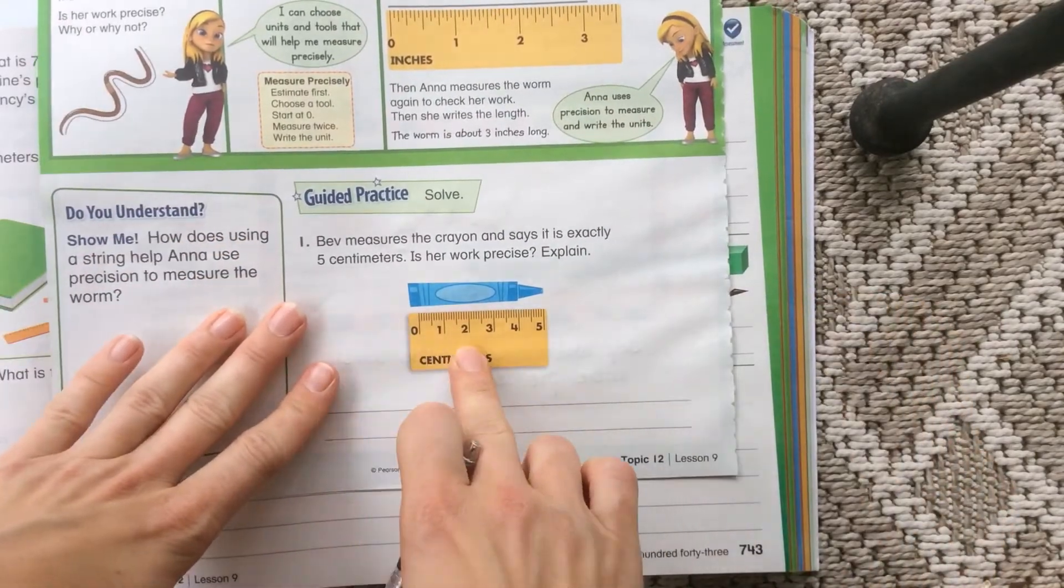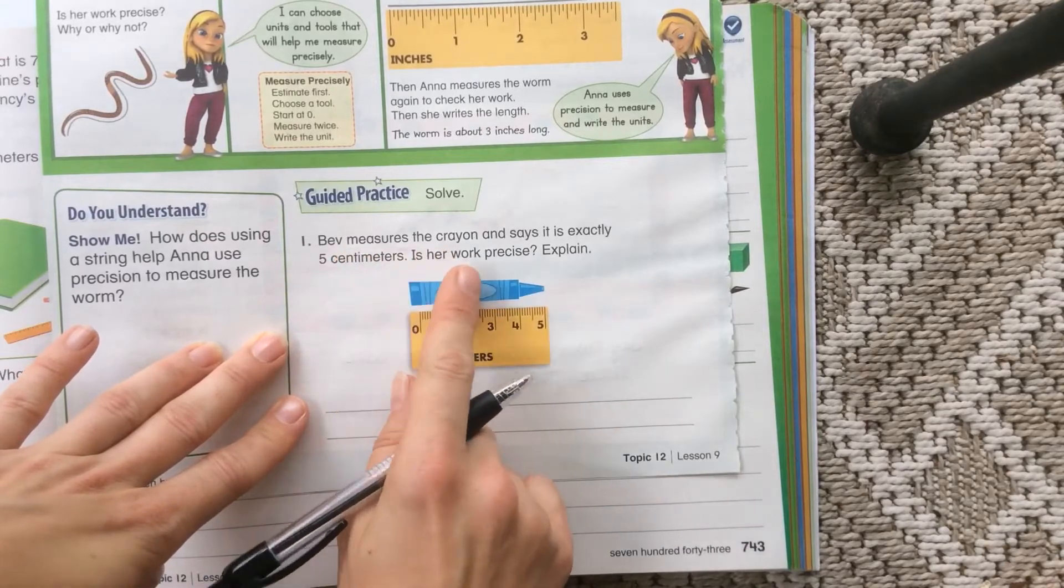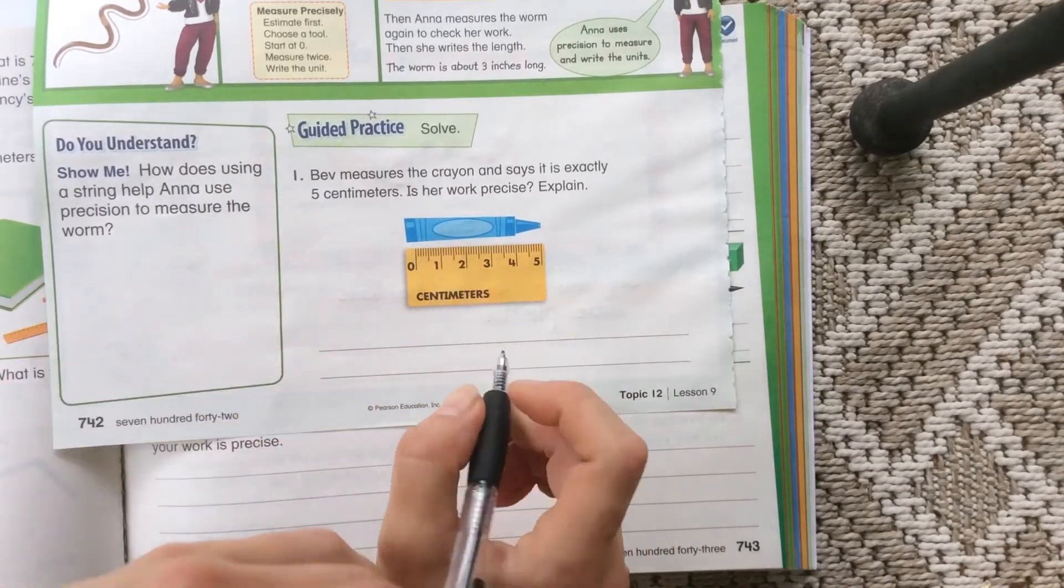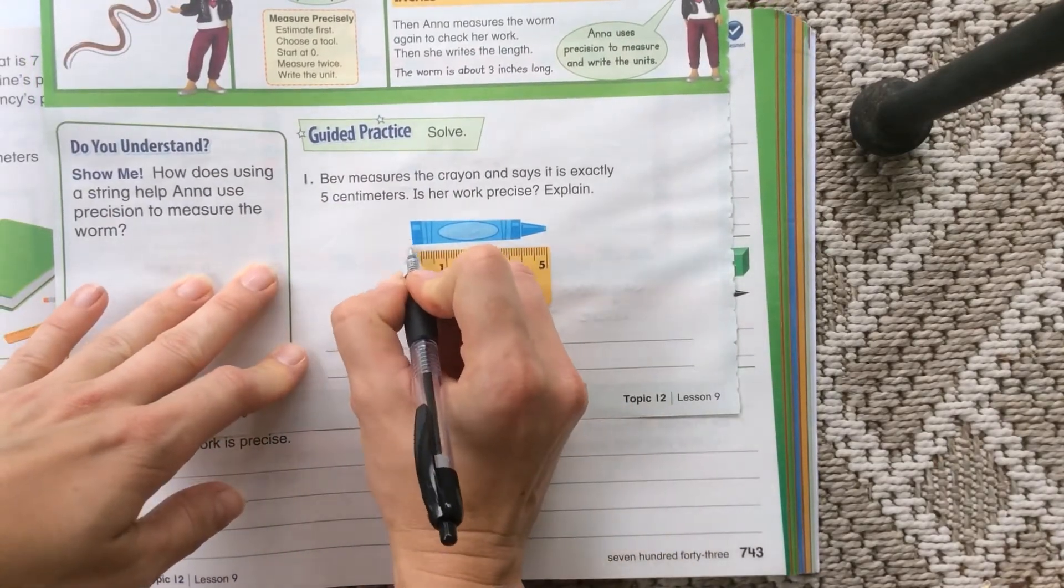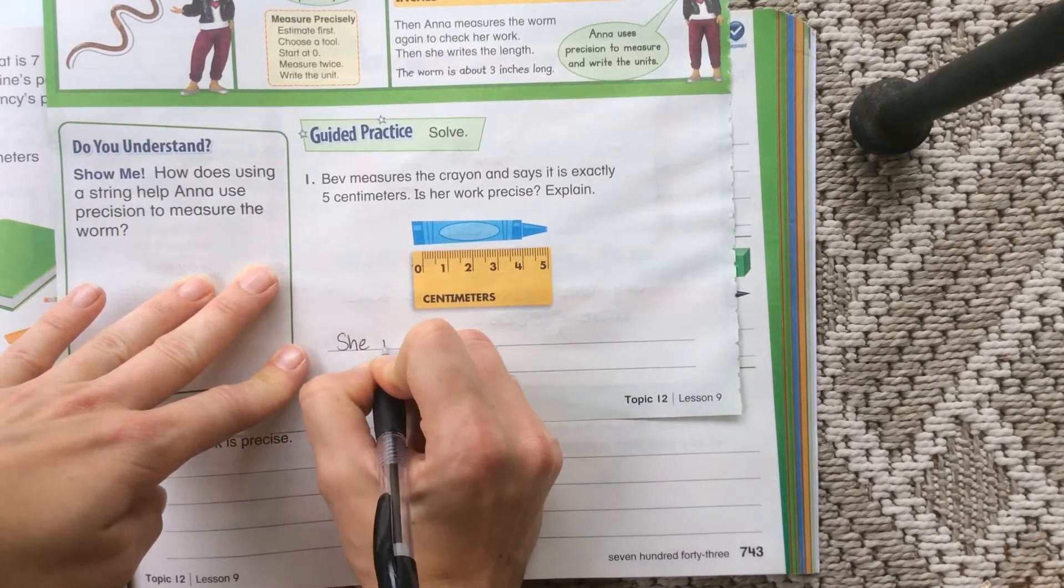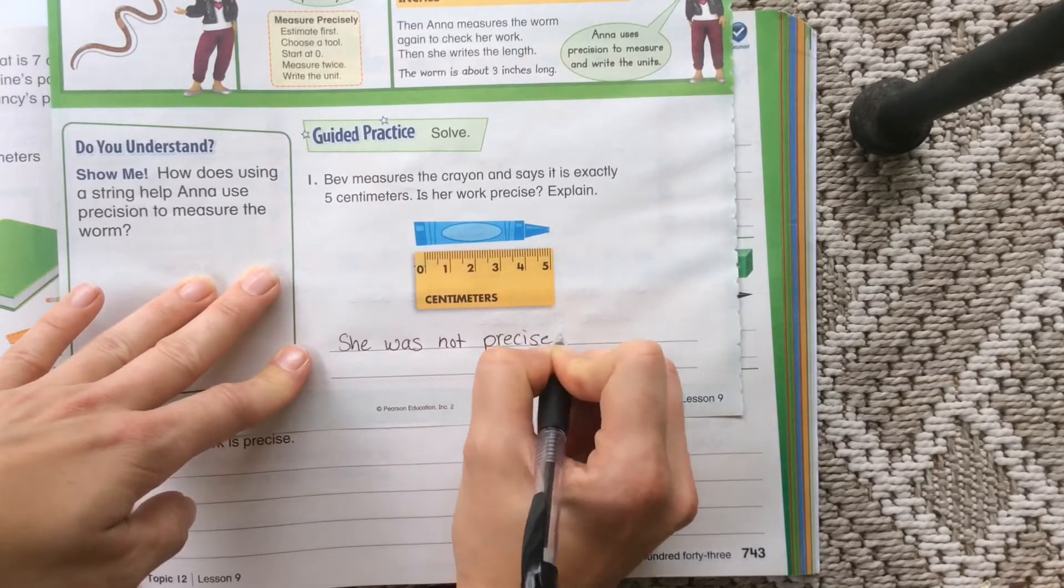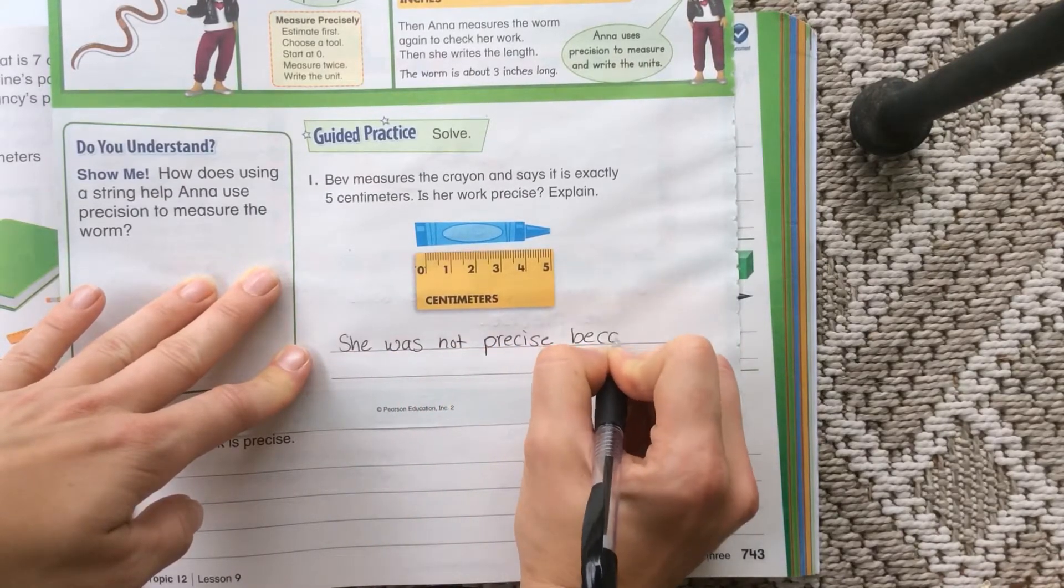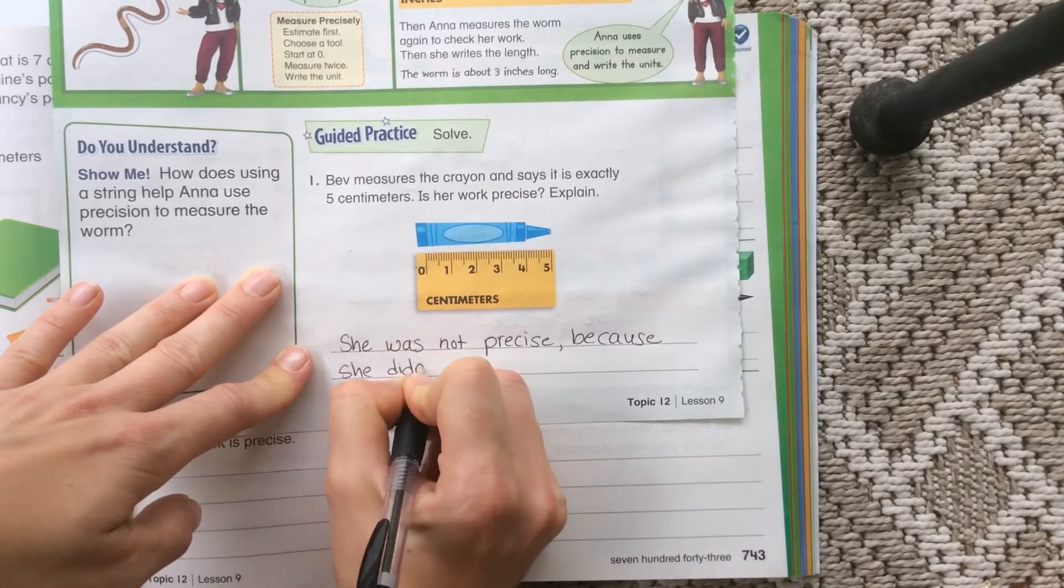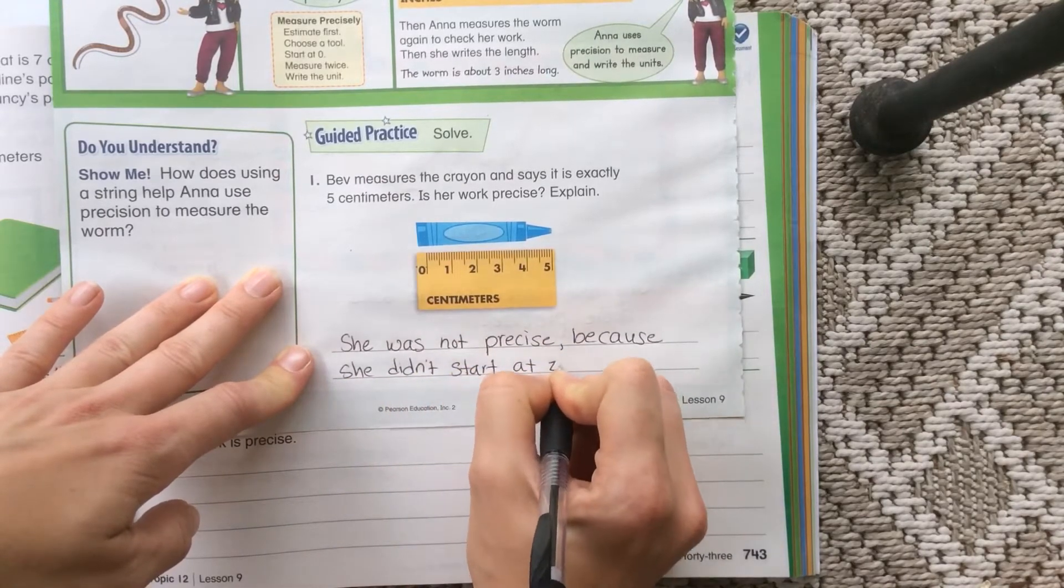So why was Bev not precise? I told you earlier that all of these, the answer was no. Bev measures the crown. It says exactly five centimeters. Is her work precise? Explain. So why wasn't Bev precise? If you look here, she started at the edge of the ruler. She didn't start at the zero line. So we can say she was not precise because she didn't start at zero.